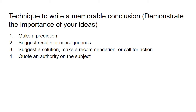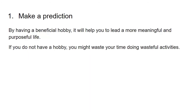The fourth way is to put an authority on the subject. If you remember from the introduction video, I used Cristiano Ronaldo as the authority — the authority is basically someone in a position of power or expertise. You can use Ronaldo again or anyone else relevant to the topic. For making a prediction: 'By having a beneficial hobby, it will help you to lead a more meaningful and purposeful life.' So you are making a prediction — by having a good hobby, you will have a meaningful life.